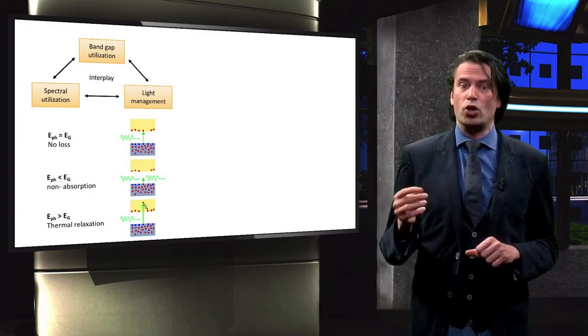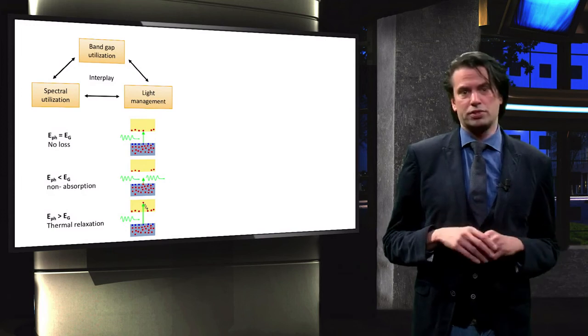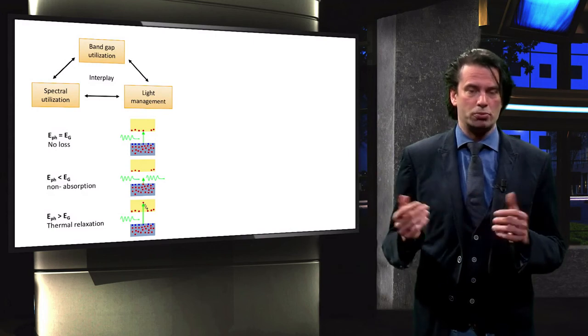These are: the photons with a lower energy than the band gap will not be absorbed at all. Secondly, solar cells will lose some of the energy of the photons higher than the band gap due to thermalization.